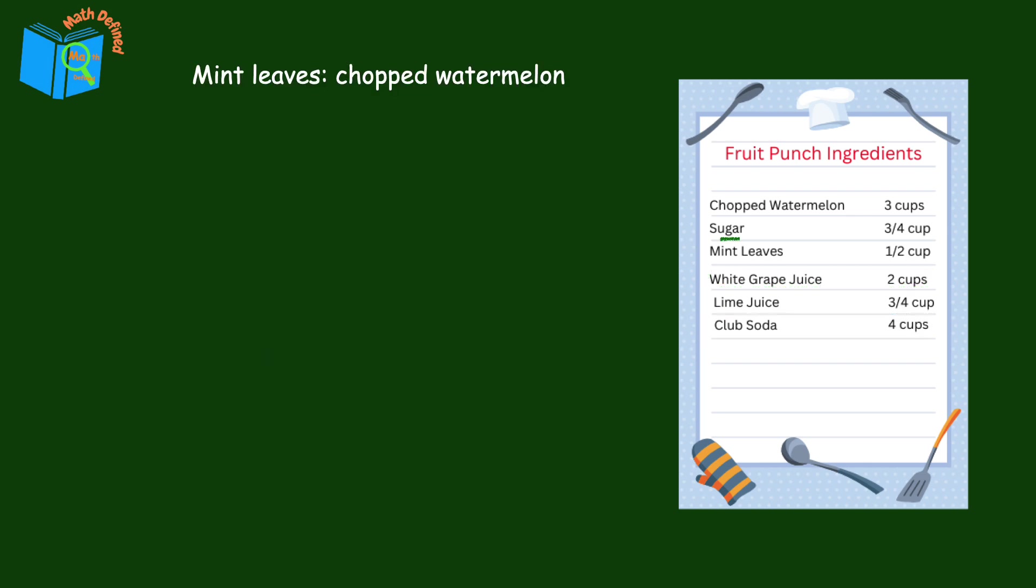Let's compare the amount of mint leaves to chopped watermelon. The ratio written as a fraction is one half over three. We'll find the value of this ratio by dividing one half by three.